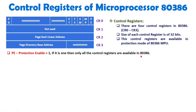When you reset your computer, it will be in real mode, and the PE bit will be 0. But once your system is set up, the PE bit will get set to 1 automatically, which indicates that 80386 is now in protection mode and you can use all the features of 80386.